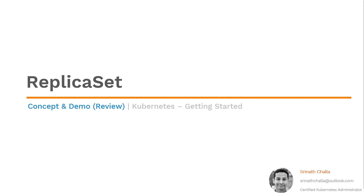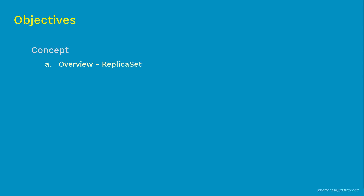Without any further delay, let's take a look at the things you will be learning as part of this video. This presentation is divided into two parts. In Part 1, we will discuss the overview of ReplicaSet, then what are labels and selectors, and finally the difference between equality-based selectors and set-based selectors.